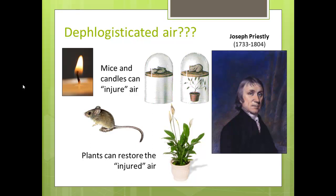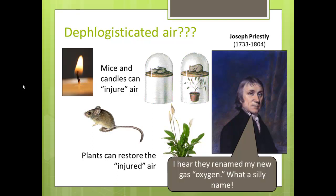His important discovery was that animals — and also candles — basically did a process that was the opposite of whatever plants did. We now know these as photosynthesis and respiration. This was a big discovery at the time: that plants and animals were sort of opposites of each other, and that something happening with plants fixed whatever animals caused. I think we should have stuck with dephlogisticated air — it has a much nicer ring to it — but oxygen is okay too. So now we know that air gets injured by animals and gets restored by plants.